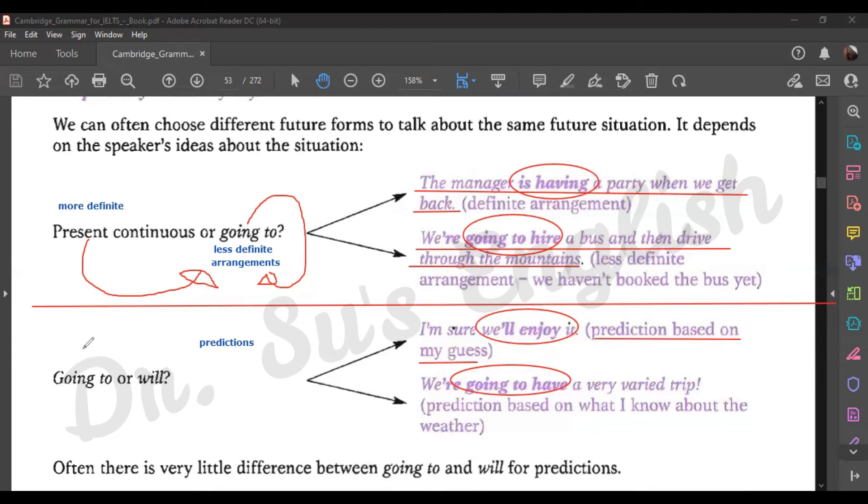If it's a definite prediction, use going to. A definite prediction based on present evidence, based on current evidence.